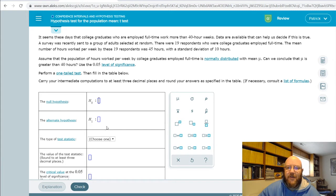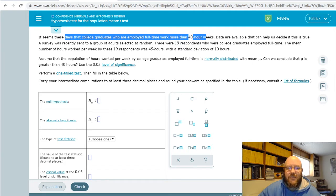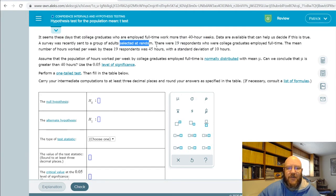Let's start with picking out our alternate hypothesis. That's our claim. It seems these days that college graduates who are employed full-time work more than 40 hours a week. Survey was recently sent out of group adults. So 19 respondents, the mean number of hours worked is 45 hours, standard deviation of 10. Can we conclude that college graduates actually work more than 40 hours a week? And so that's our claim. We're saying that it's now more than 40 hours a week, whereas before it is 40 hours or less.